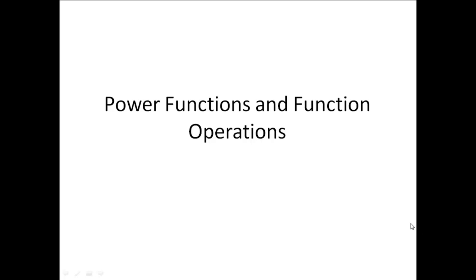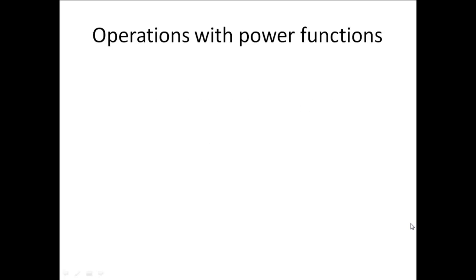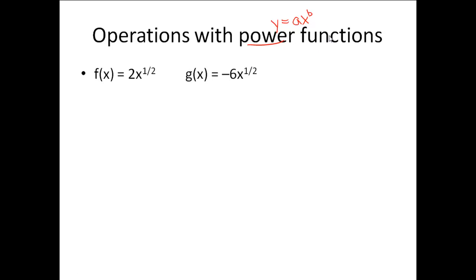We're going to be looking at power functions and their operations. First thing we need to do is identify what a power function is. A power function is of the form y equals a times x raised to the b. So we have an exponent in here, which is where we get the name power function. We're going to use the two functions: f of x equals 2x to the 1 half, and g of x equals negative 6x to the 1 half.